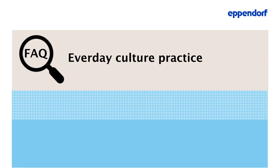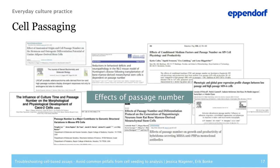Our next topic is everyday culture practice. The passage number of cell lines has often been described to influence cellular behavior. The passage number is a record of the number of times the cell culture has been subcultivated. There are numerous studies giving evidence that passage number affects a cell line's characteristics over time — including alterations in morphology, response to stimuli, growth rates, protein expression, and transfection efficacy.